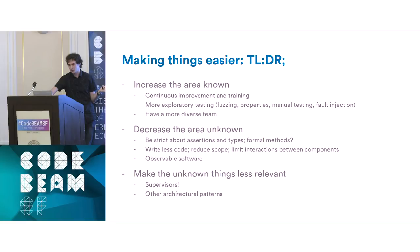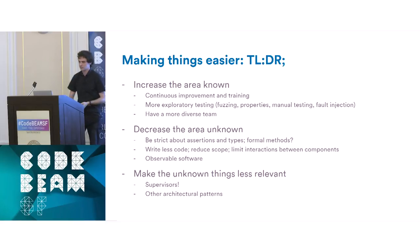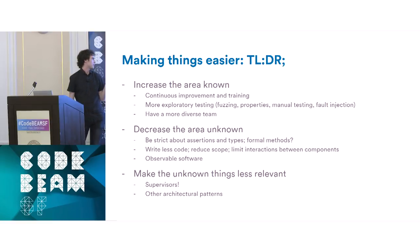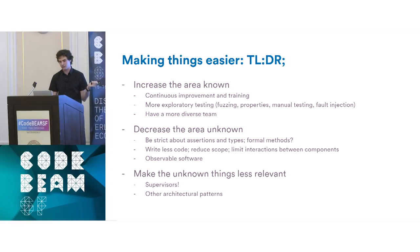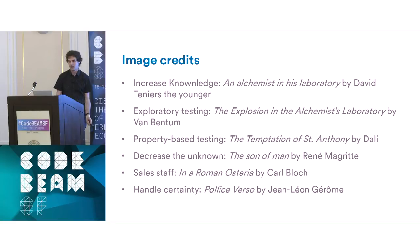Too long, didn't listen summary: increase the things you know through good practices, hiring, fuzzing, fault injection, and testing. Decrease the areas unknown by being stricter about what you do. And make the unknown things irrelevant through architecture patterns.